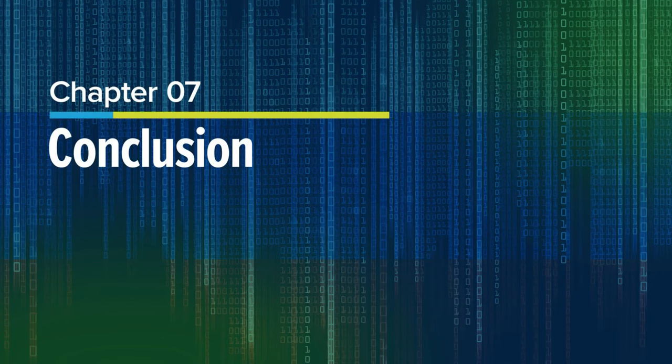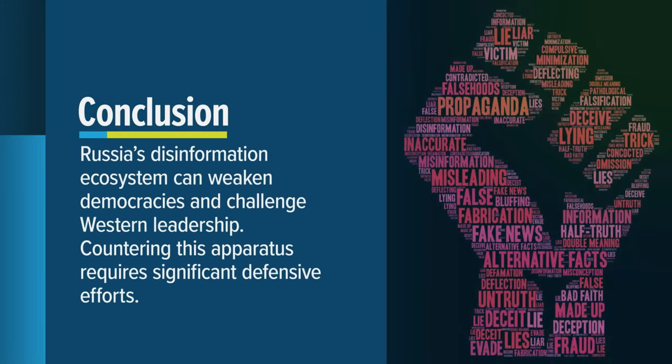Chapter 7: Conclusion. For nearly a century, Russia has engaged in disinformation campaigns against its foreign and domestic enemies. Currently, it has a sophisticated ecosystem of disinformation that it uses to weaken democracies around the world and challenge Western leadership. Countering this apparatus will require significant defensive efforts from government, business, academia, and private citizens to protect against disinformation.